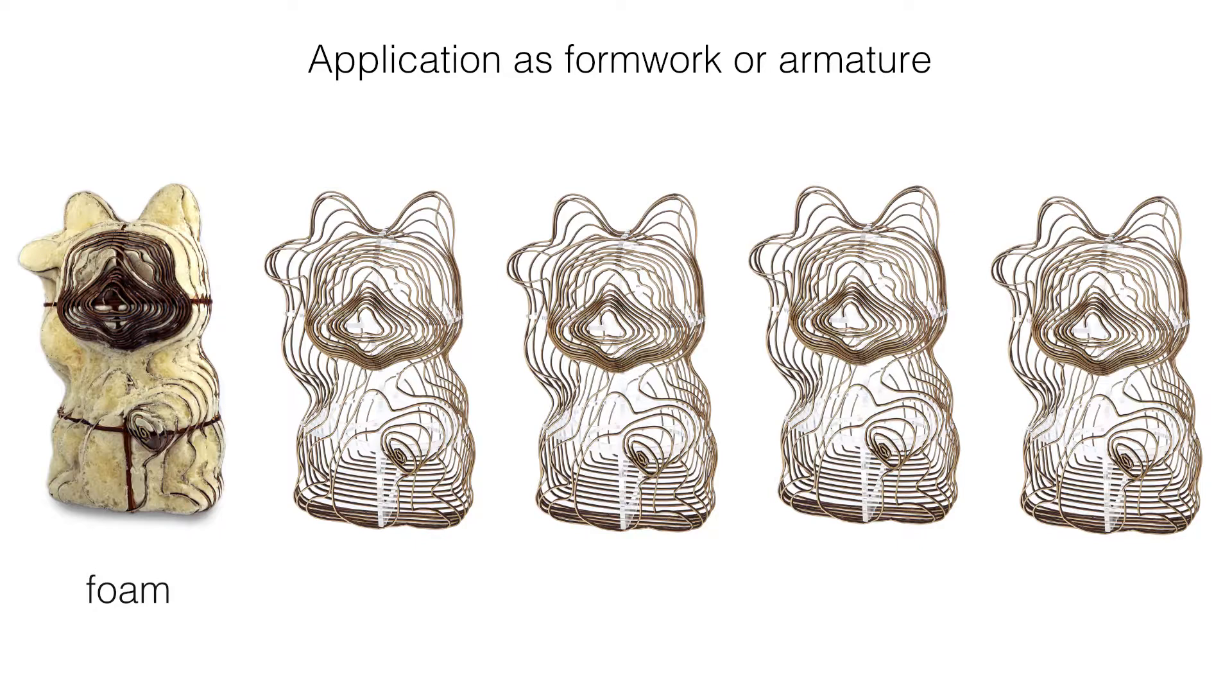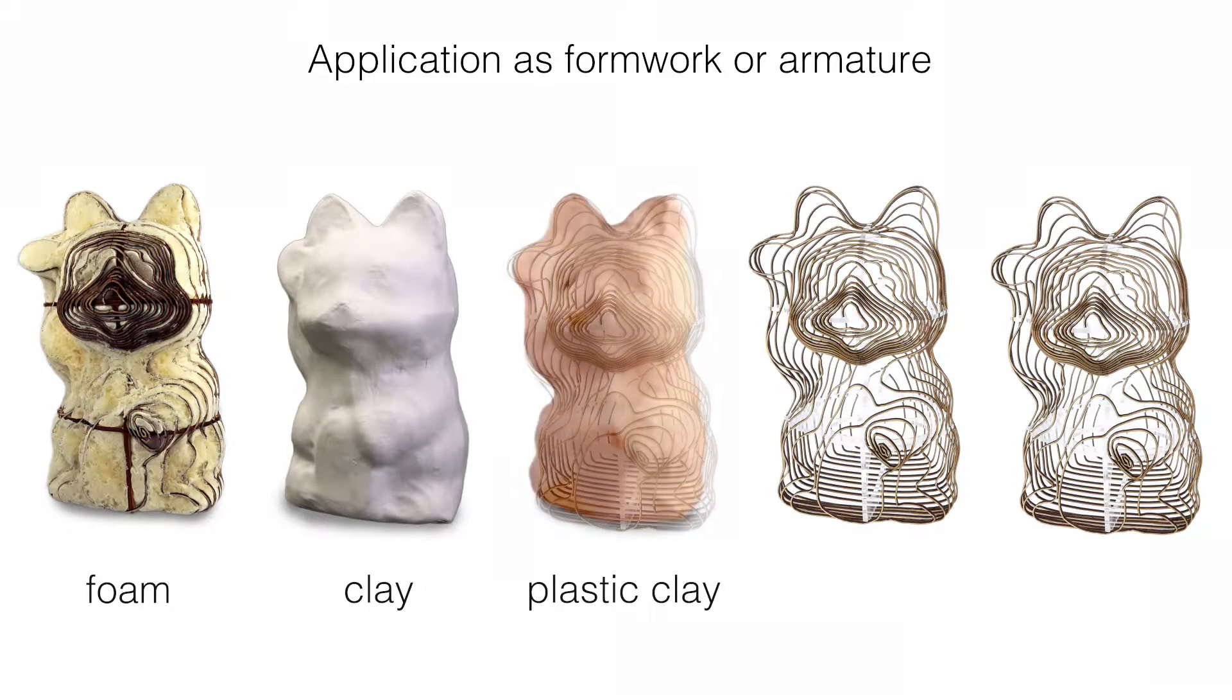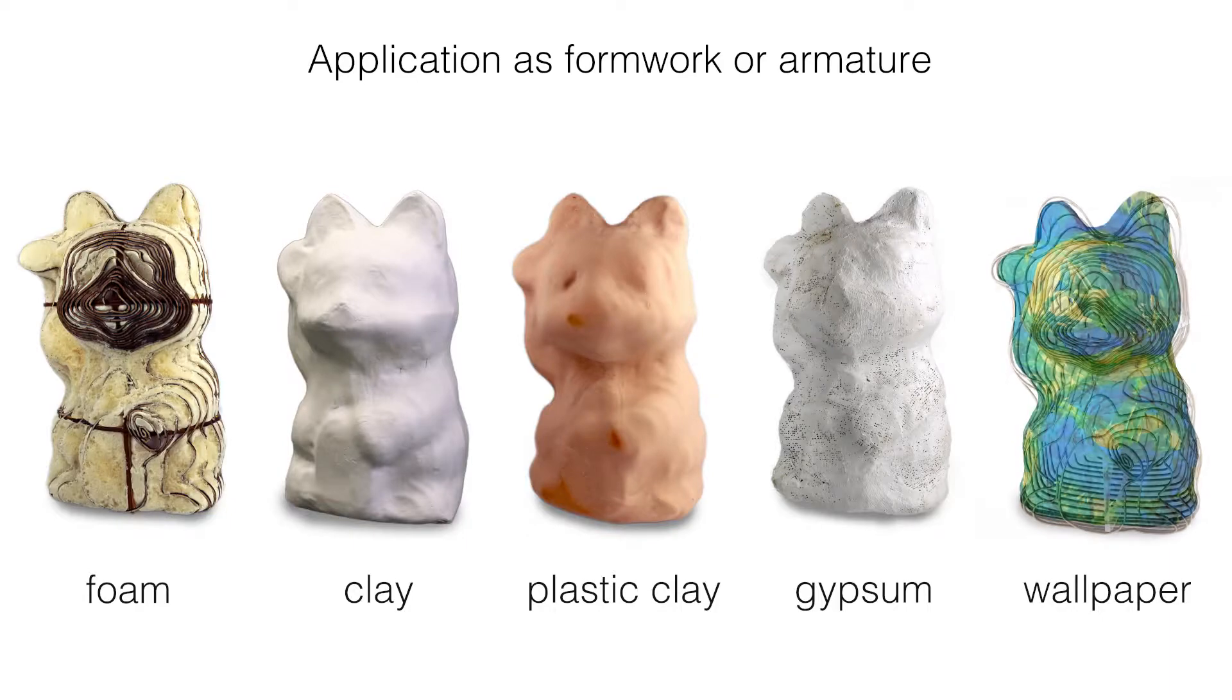Another application are armatures, which means covering the resulting 3D spiral with materials like air drying clay, heat drying polymer clay, gypsum or wallpaper.